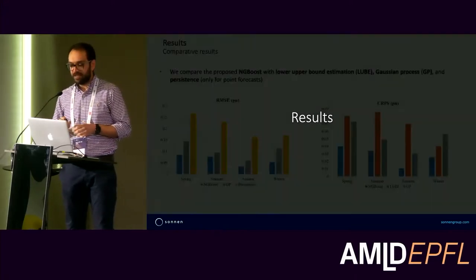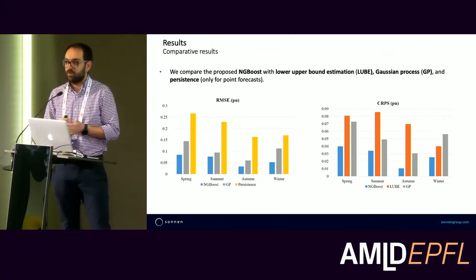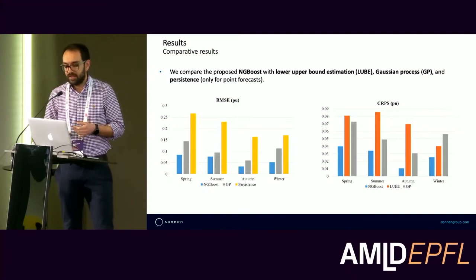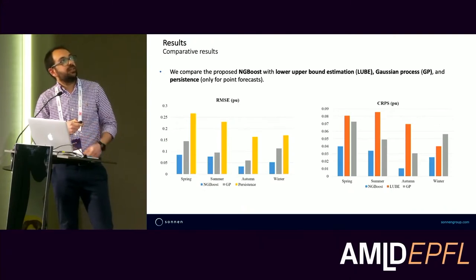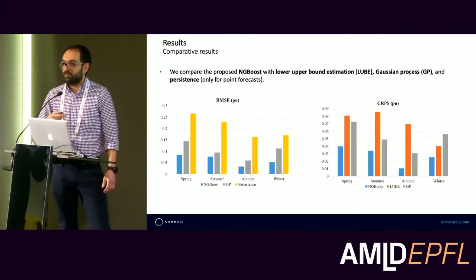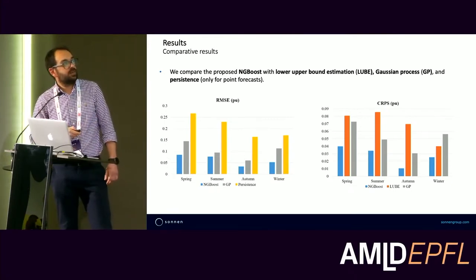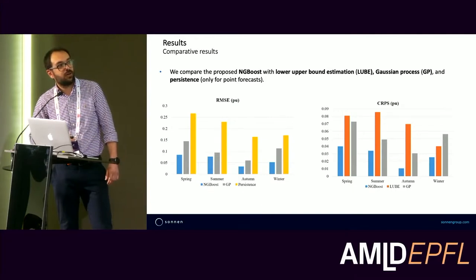Now let's look at the results. To evaluate the performance of NGBoost for probabilistic PV power forecasting, we compare it with two probabilistic machine learning approaches: the lower-upper bound estimation and the Gaussian process. We show the average root mean square error (RMSE) and the continuous rank probability score (CRPS), which is a metric for evaluating the predicted probability distribution as a whole, across test months in spring, summer, autumn, and winter. As shown by the blue bar corresponding to NGBoost, this algorithm outperforms both the lower-upper bound estimation and the Gaussian process in all seasons for both RMSE and CRPS.